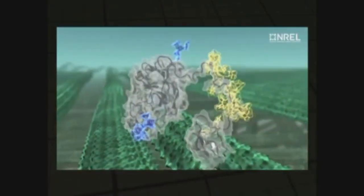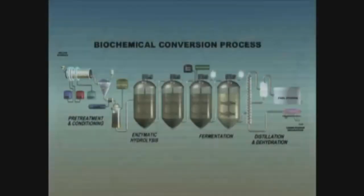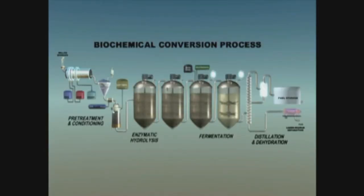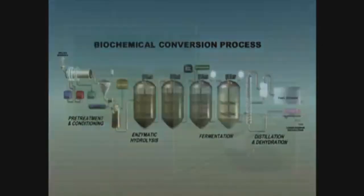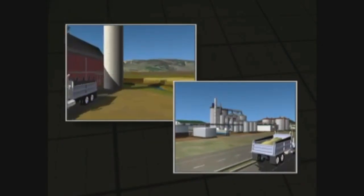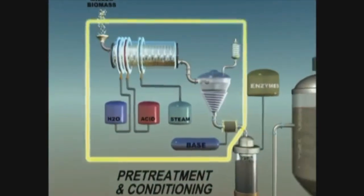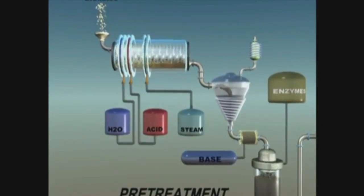Biochemical conversion uses enzymes and microorganisms to convert biomass into sugars and those sugars into biofuels or bioproducts that can replace products currently made from crude oil. Here's one example of a biochemical conversion process. After biomass is collected and transported to the processing facility, it undergoes a pretreatment process so the components of the biomass are easier to break down with enzymes in the subsequent steps.